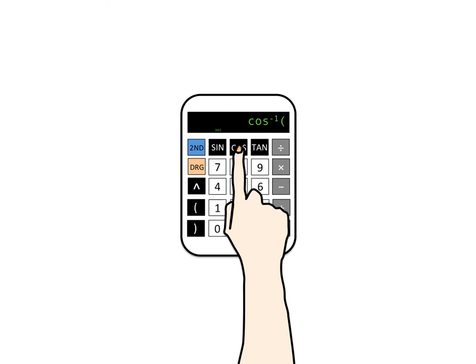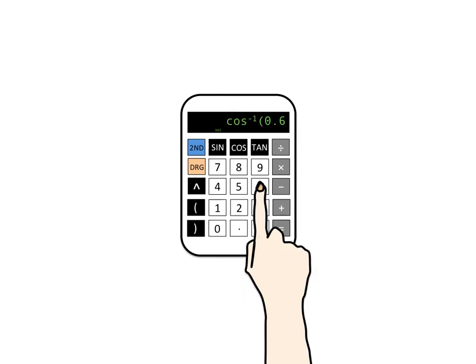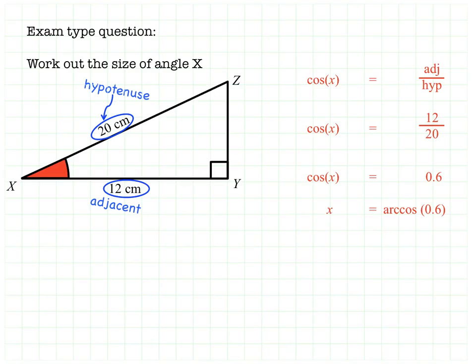So the inverse cos or the arc cos of, I'm going to type in 0.6, and then some calculators will need me to close that bracket that I've made, a lot won't. So I'm just going to press equals on my calculator and I get the answer 53.13 and some more decimals. So that means that the missing angle X is 53.1 degrees.